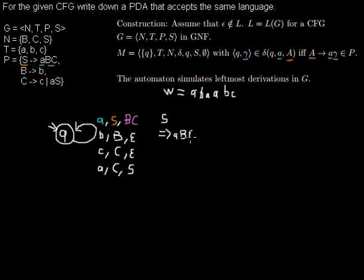Now in the leftmost derivation we have to take from the string the leftmost non-terminal. So in this case it's B because it's left of the capital C and we don't have any other. So next I have to exchange B, and I have to take this rule because there's no other rule — I exchange the non-terminal B by a terminal B.